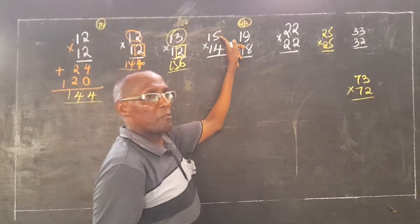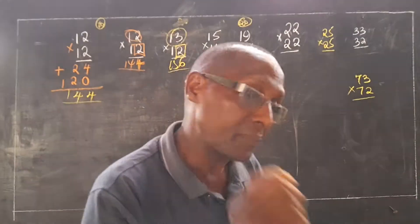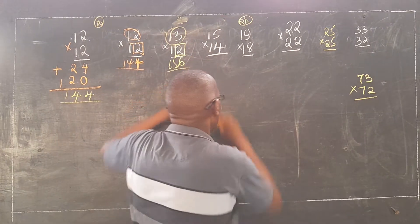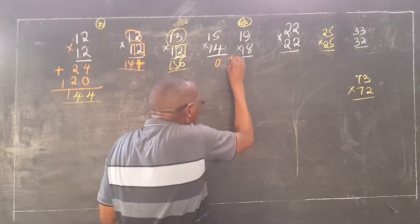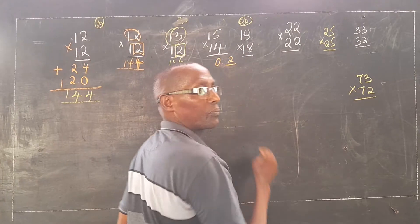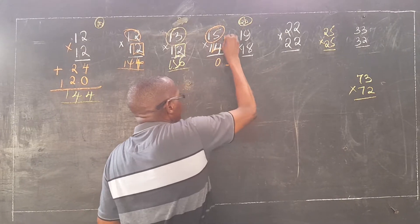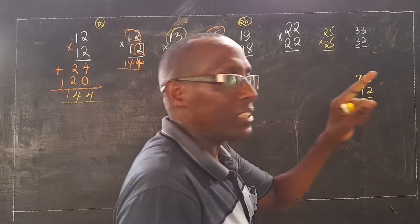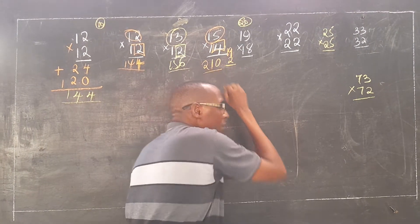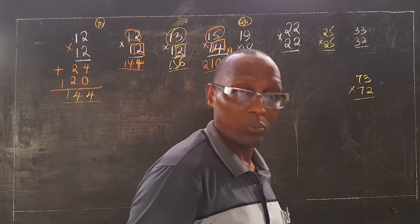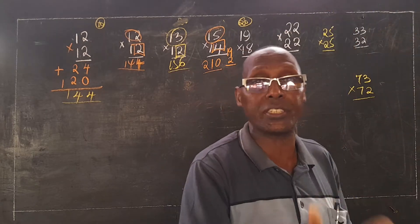Come here. 5 and 4 are in the place value of 1s. 5 times 4 is 20 — write 0, carry 2. Don't forget you are carrying. 15 plus 4 is 19. Add the 2: 21. The answer is 210. As simple as you can see — any two digits between 10 and 20, use that method.